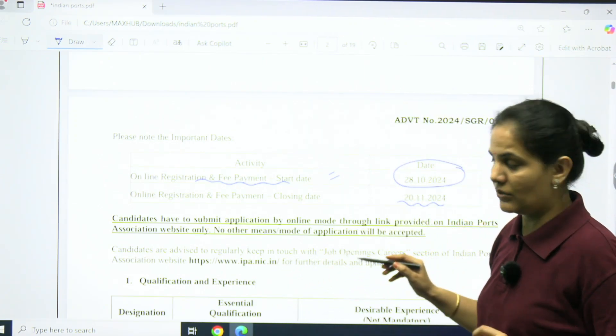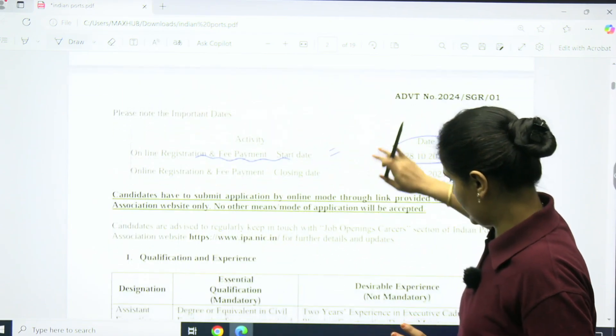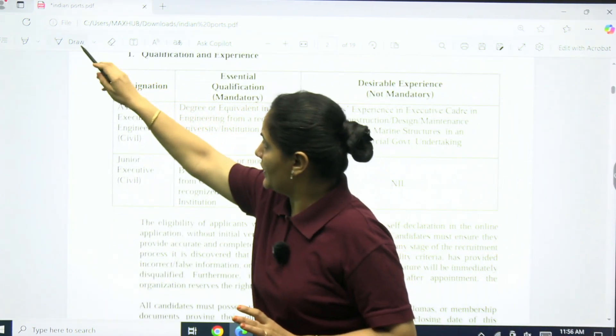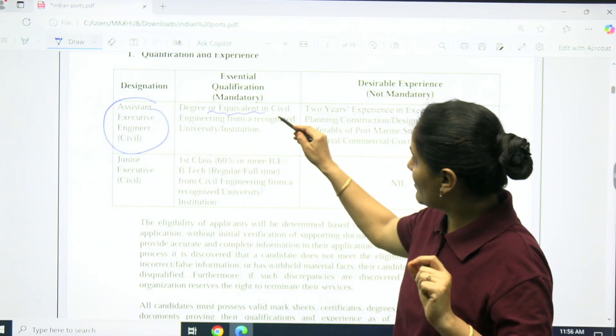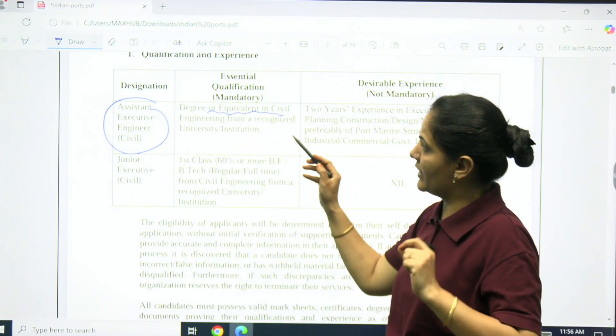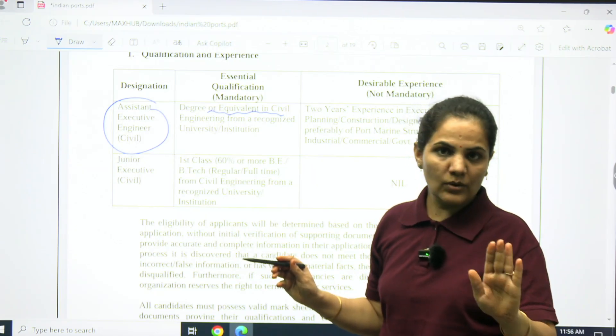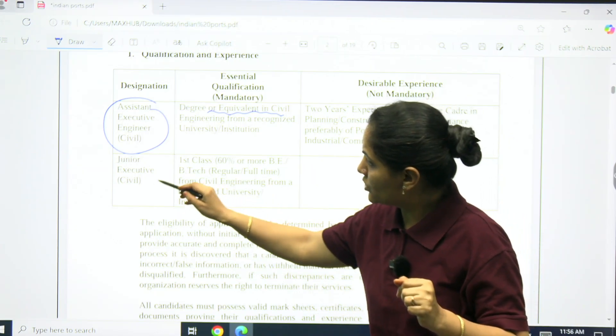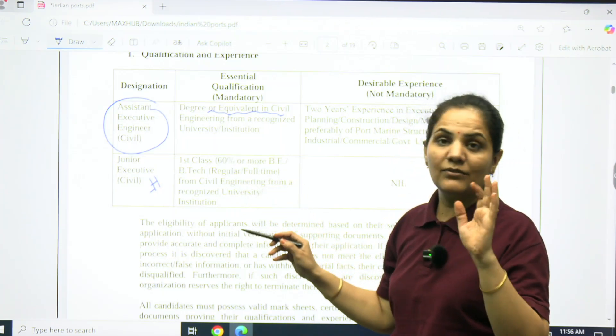What is the essential qualification required? For Assistant Executive Engineer Civil, degree or equivalent in civil engineering from a recognized university. If you are having B.Tech degree or equivalent, you are eligible.